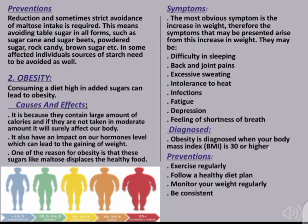The second disease is obesity. Consuming a diet high in added sugar can lead to obesity because these foods contain large amounts of calories, and if not taken in moderate amounts, they will affect the body. They also have an impact on hormone levels, which can lead to weight gain. One of the reasons for obesity is that sugars like maltose displace healthy food. The most obvious symptom of obesity is an increase in weight, and other symptoms arising from this weight gain may include difficulty sleeping, back and joint pains.